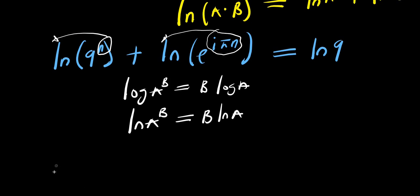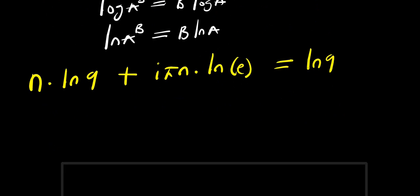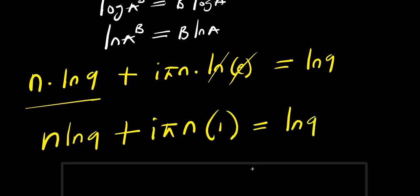So we simply have n times natural log of 9, plus i times pi times n times natural log of e, equals natural log of 9. Since natural log of e equals 1, we have n times ln 9 plus i times pi times n times 1 equals ln 9.